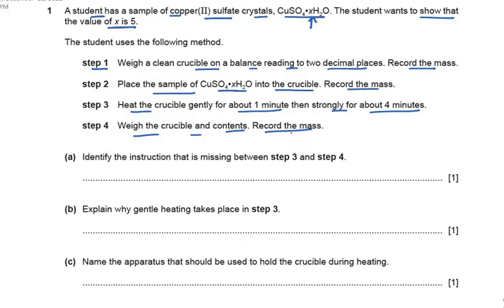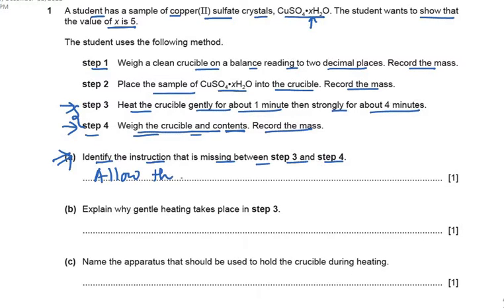You can always pause the video and read the question properly. Part A asks: identify the instruction that is missing between step 3 and step 4. Step 3 is heating the crucible, and step 4 is weighing. What is missing between step 3 and step 4 is: allow the crucible and contents to cool down. Whenever an experiment involves a crucible and heating, allowing it to cool is necessary before weighing.